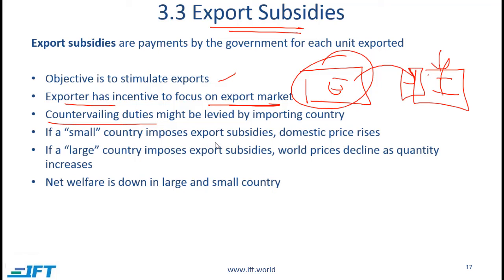If a small country imposes export subsidies, domestic prices will rise. This is because domestic producers will focus more on the export market, the amount produced for the local market will go down, and hence prices will go up.